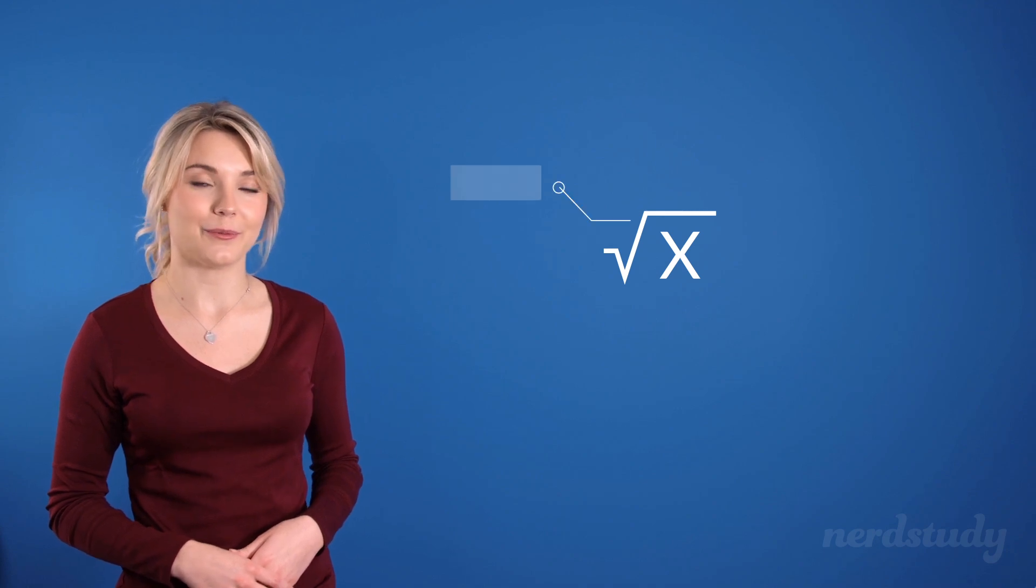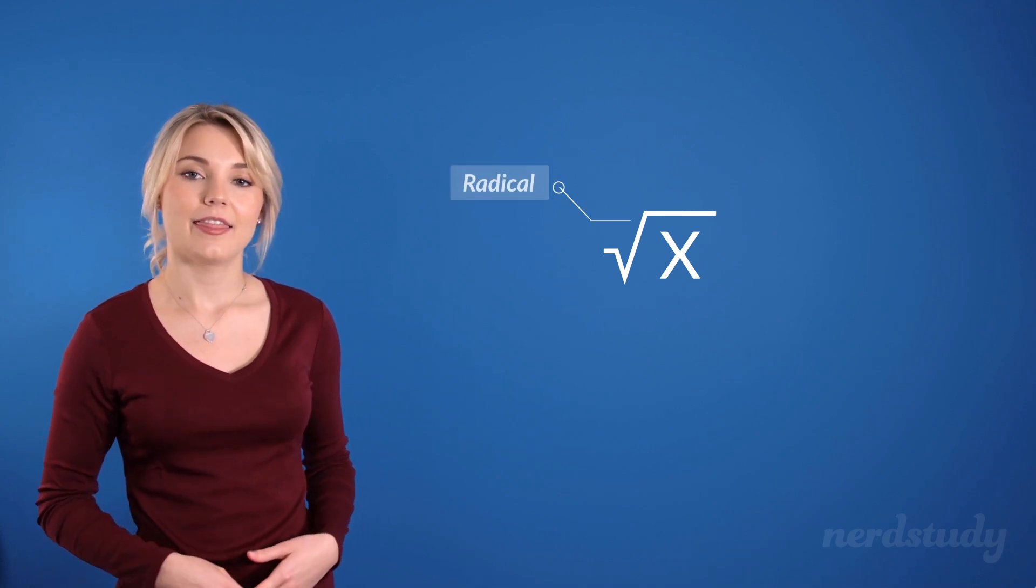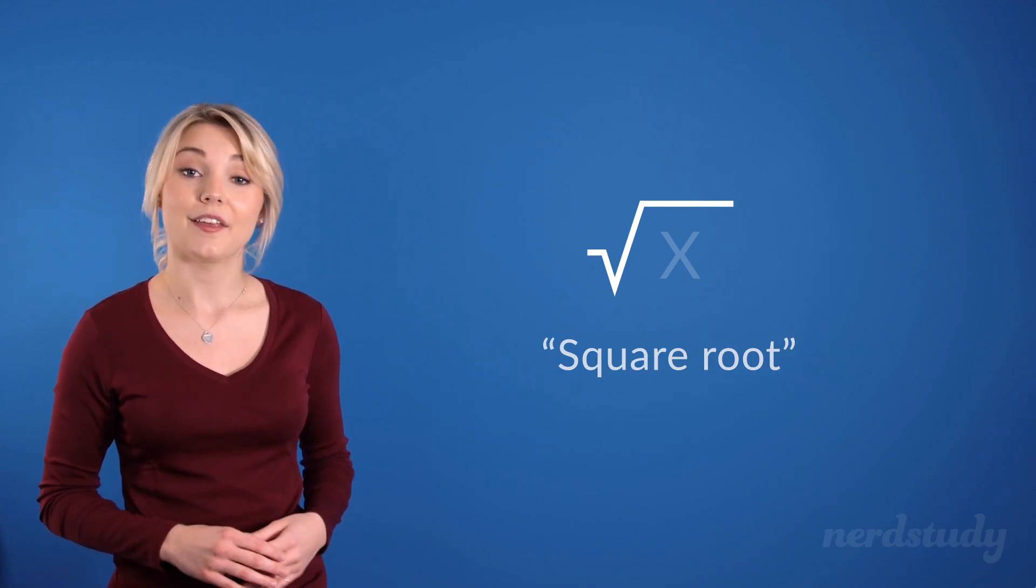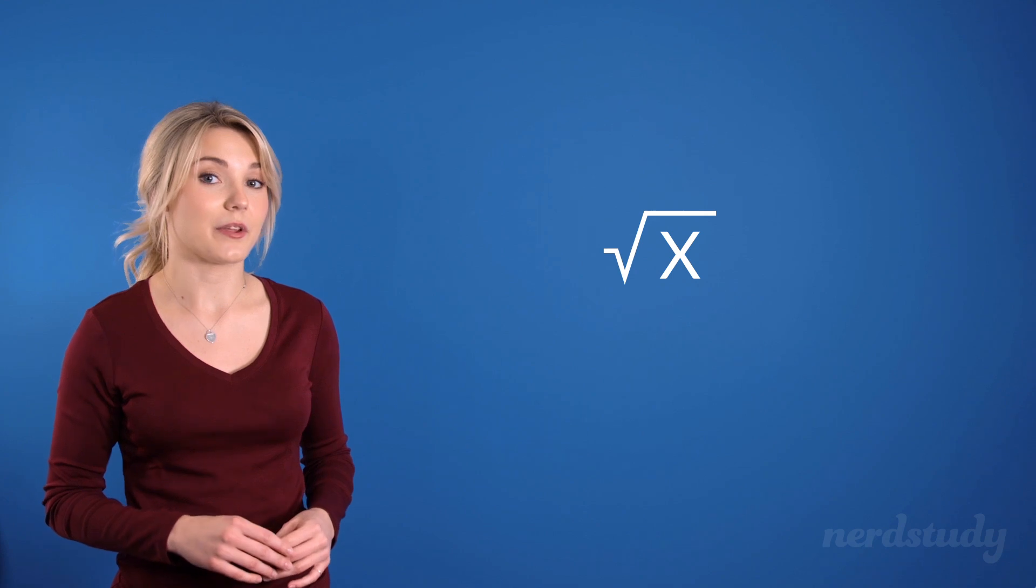A radical is any number that can be expressed with a radical symbol which looks like this. This sign over here is a square root sign and of course we already know what that does. There is, however, something that's worthy of noting.